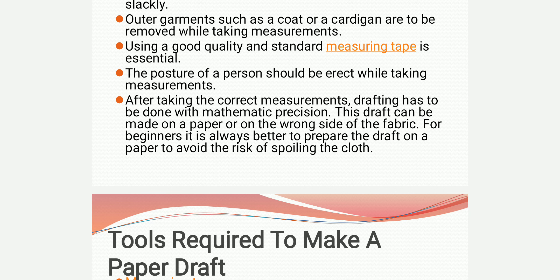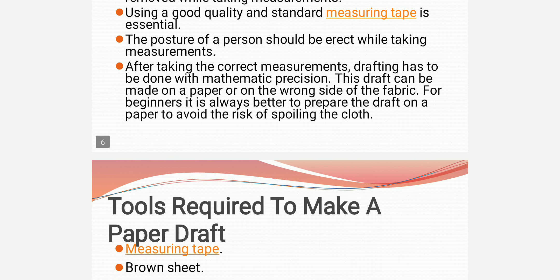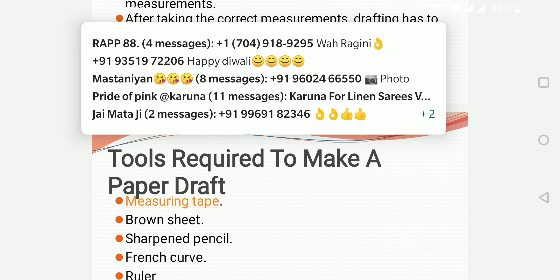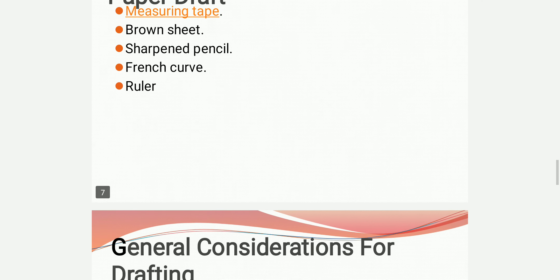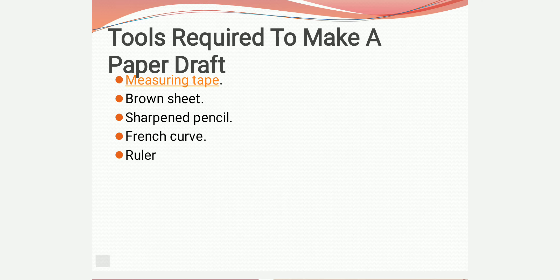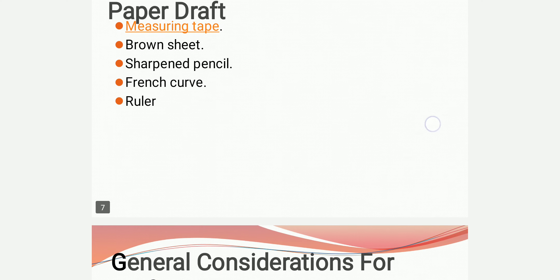This draft can be made on paper or on the wrong side of the fabric. For beginners, it is always better to prepare the draft on paper to avoid the risk of spoiling the cloth. Tools required to make a paper draft include: measuring tape, brown sheet, sharpened pencil, French curve, ruler, etc.